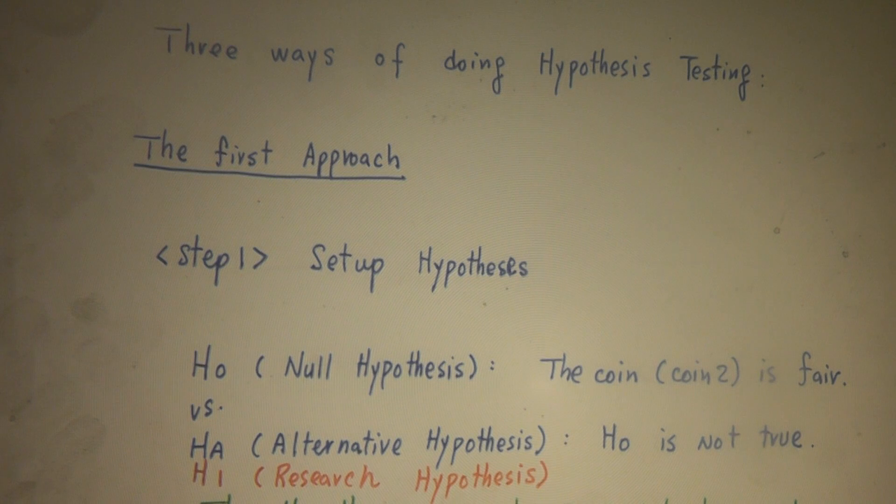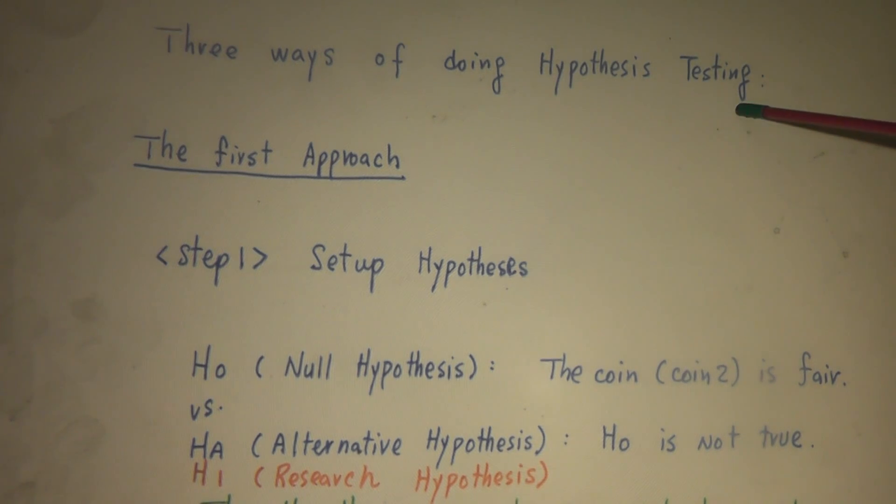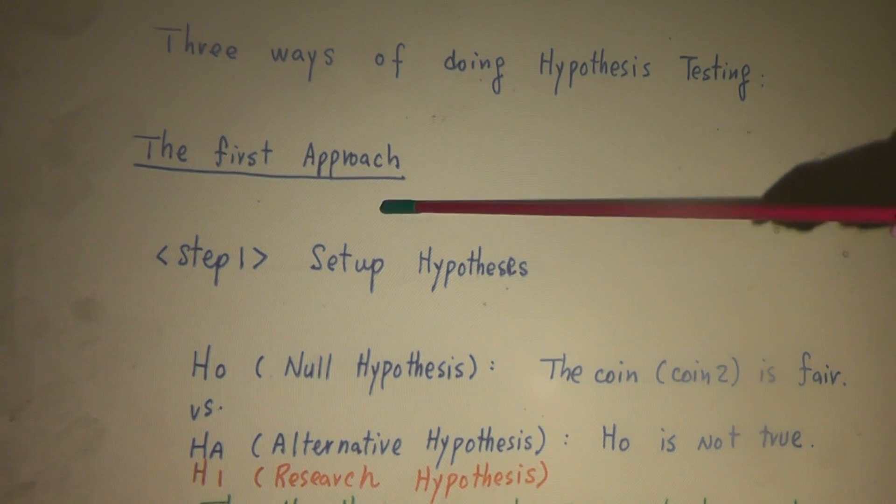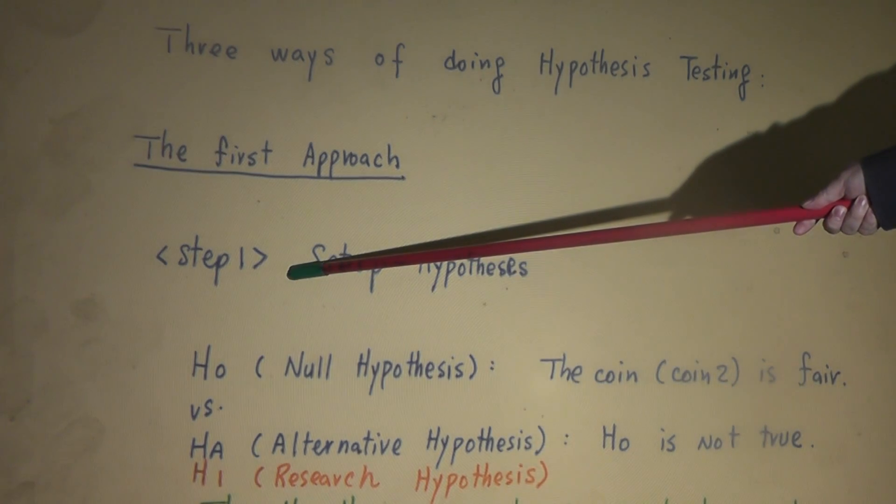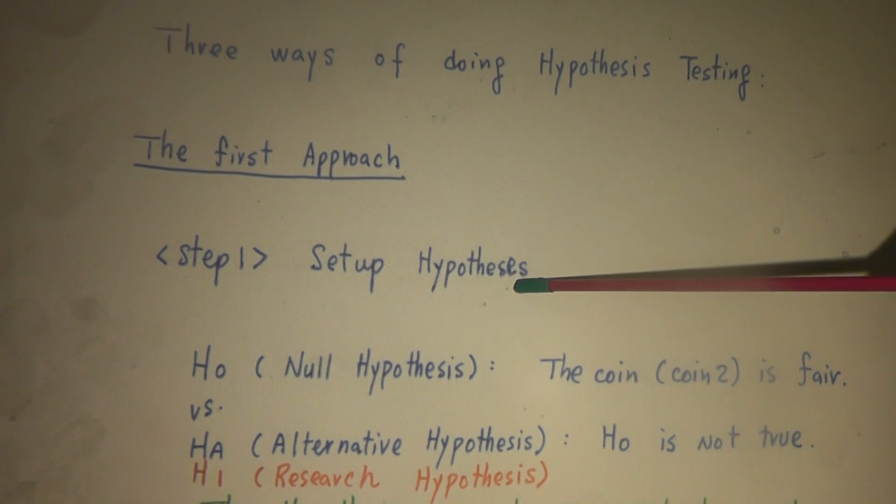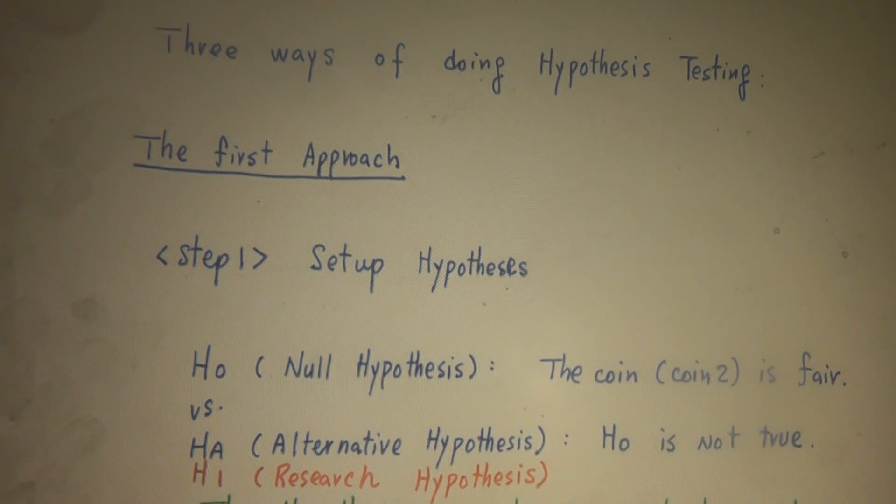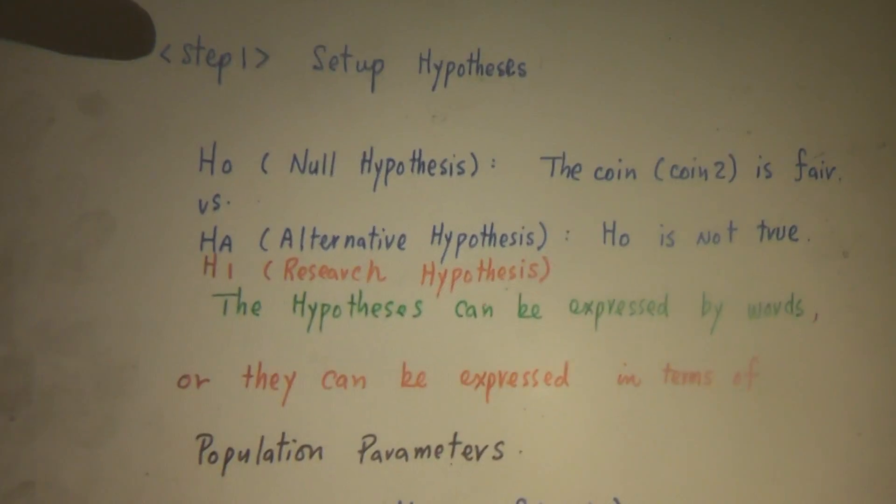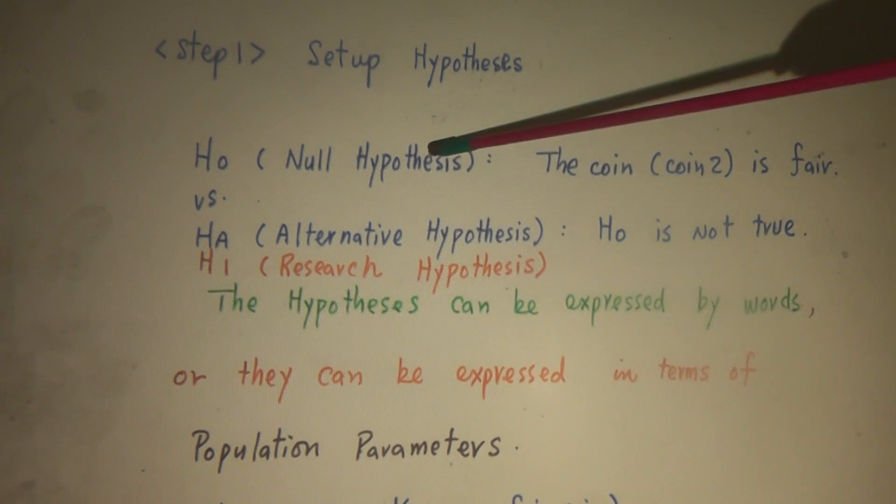Next let's introduce you the three ways of doing hypothesis testing. The first approach, step one. The first step is to set up hypothesis. And there are two hypotheses to be set up in hypothesis testing.